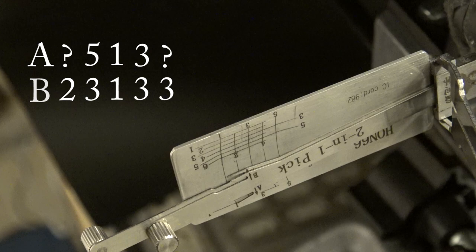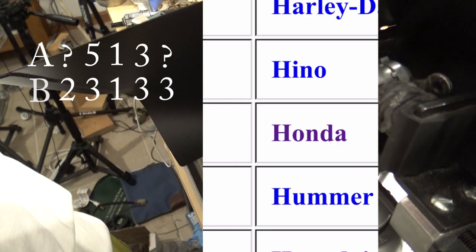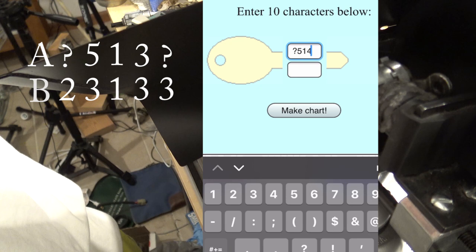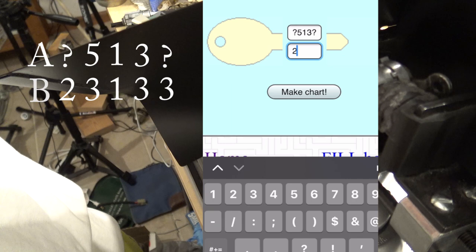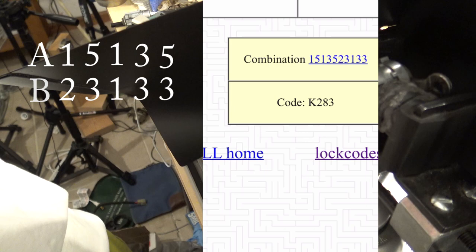And then go ahead and turn the screen record on here. And we run this through lock codes here. Alright, so we've got Honda. And we're doing 4-track. And A side, we're going to do question mark, 5, 1, 3, question mark. And then on the B side, 2, 3, 1, 3, 3. And it will make us a chart. And there's our code right there. It only came up with one code. So we're going to go cut the key to this. And we will try it out here. So let me go do that. And we'll be right back.